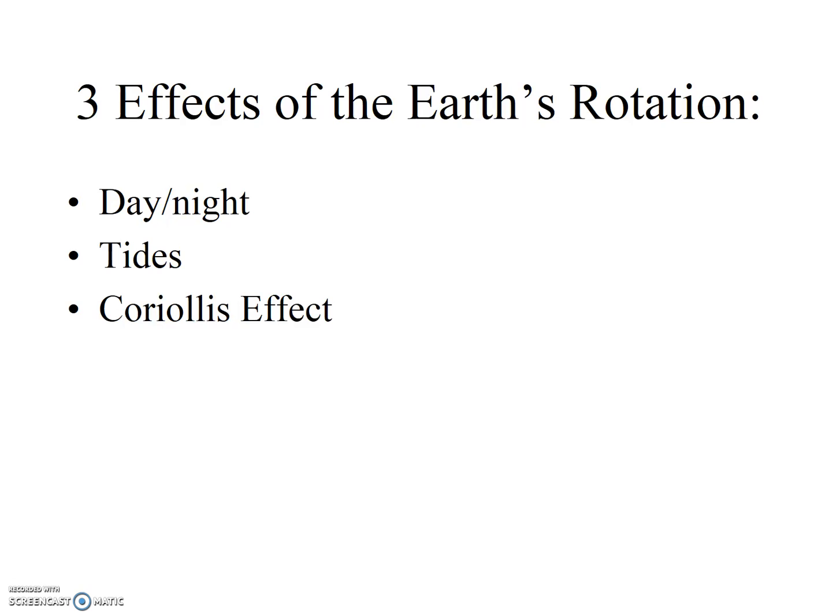The second impact related to rotation is the tides. As the Earth turns, points of the waters on the Earth's surface experience increasing and decreasing gravitational pull due to the changing distance from the Sun and the Moon. Tides move in and out as a result of this increasing and decreasing gravitational pull.